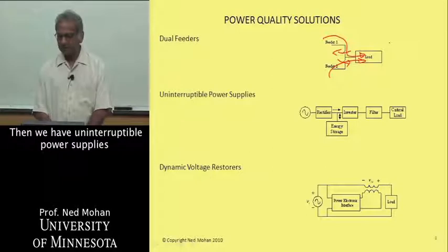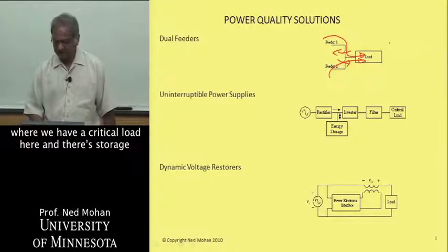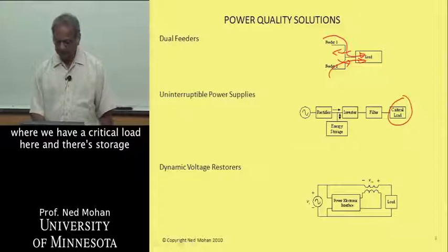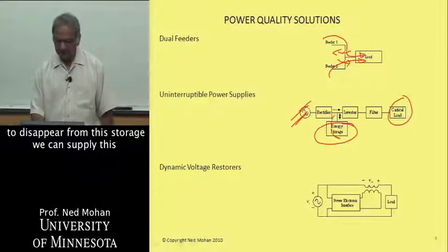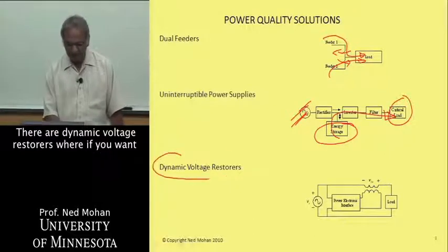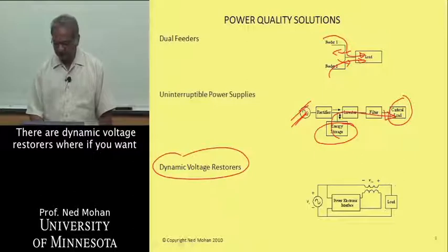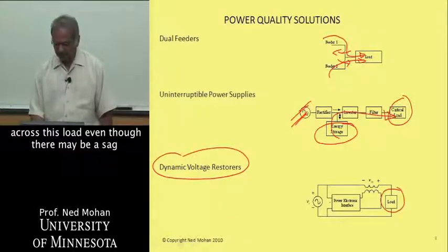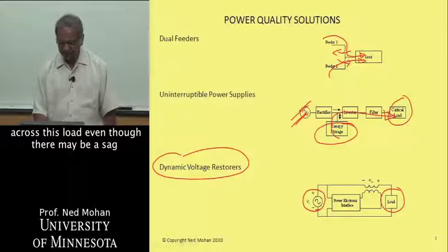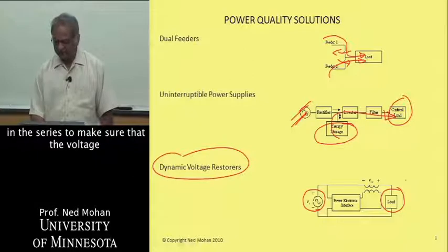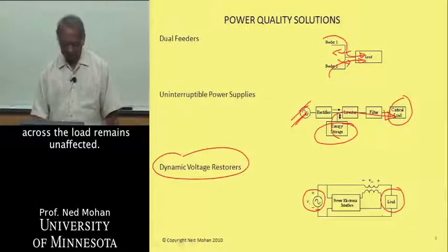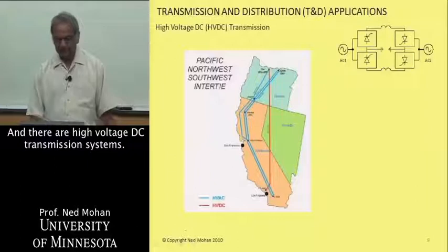We have uninterruptible power supplies with critical loads and battery storage, so even if the utility power disappears, we can supply the critical load. There are also dynamic voltage restorers where, if you want to maintain the voltage across a load even when there's a voltage sag coming in, we can inject voltage in series to ensure the load voltage remains unaffected.